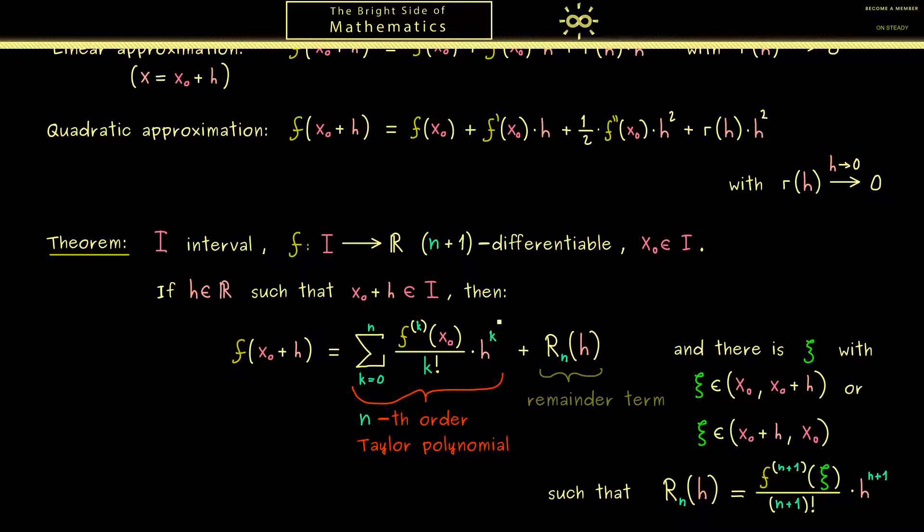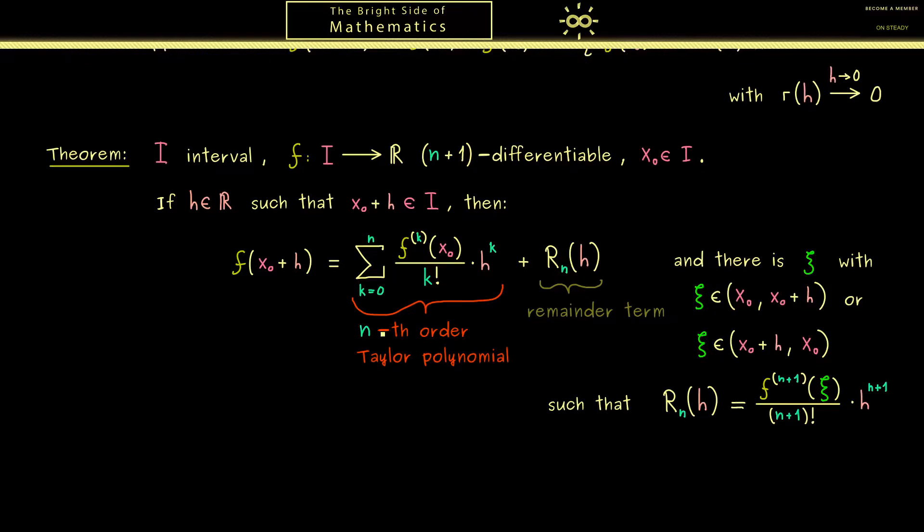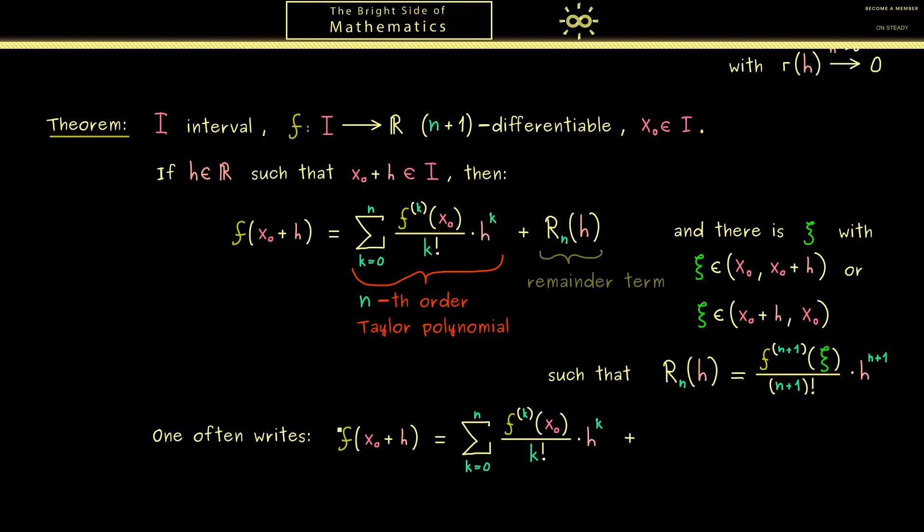And maybe I should tell you sometimes you also see it in a different form. This happens when one is interested in the Taylor polynomial but not in the explicit calculation for the remainder term. Then one just writes plus big O of h to the power n plus 1. It just reminds us that here in the remainder term h occurs with the power n plus 1. But we don't care how big the constant here is.